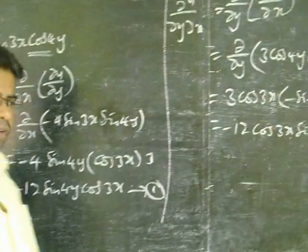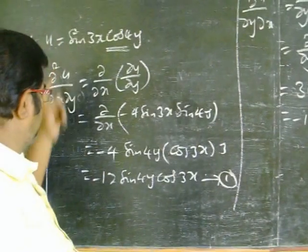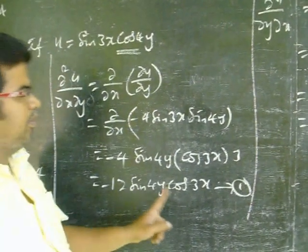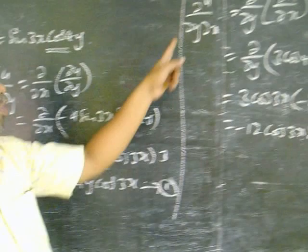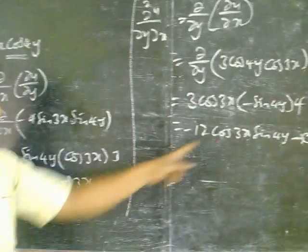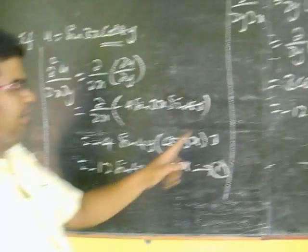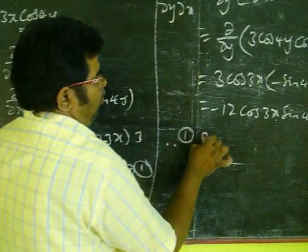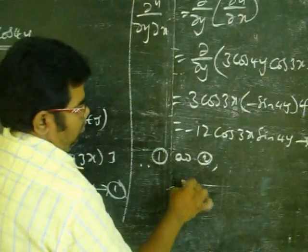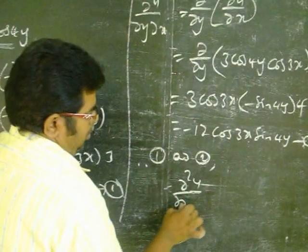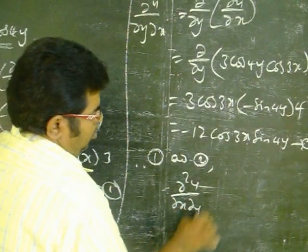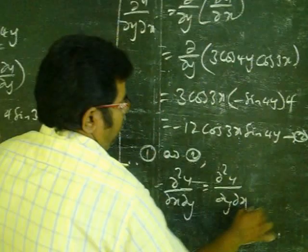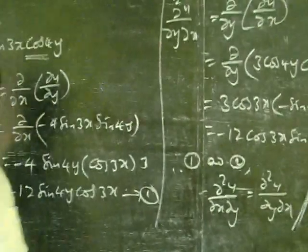Therefore, from equations 1 and 2: ∂²u/∂x∂y = minus 12·sin(4y)·cos(3x), and ∂²u/∂y∂x = minus 12·cos(3x)·sin(4y). Both are equal. Therefore, ∂²u/∂x∂y = ∂²u/∂y∂x. Here is the proof.